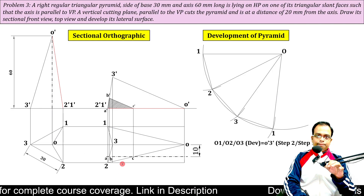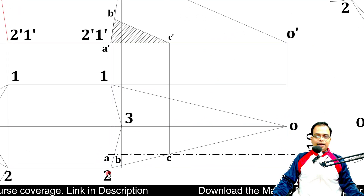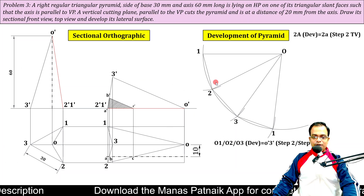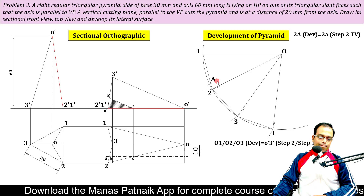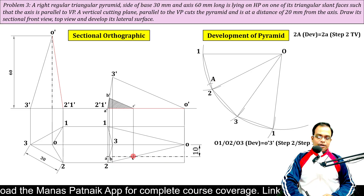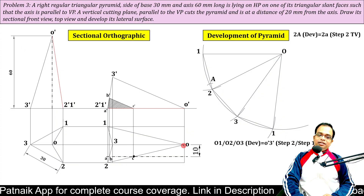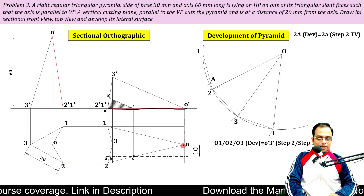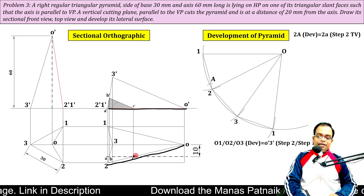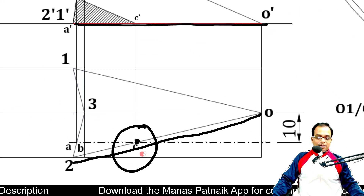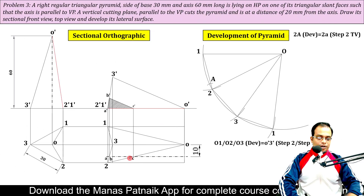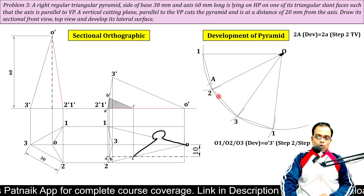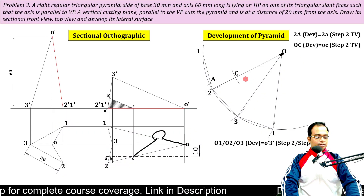So you can directly take 2A as the radius, with 2 as center cut an arc towards 1 — you'll get point A. Similarly for point C: since O'-2' is parallel to XY, the top view O2 represents the true length, and point C lies on this true length. So take OC as the radius, with O as center cut an arc — this gives you point C.